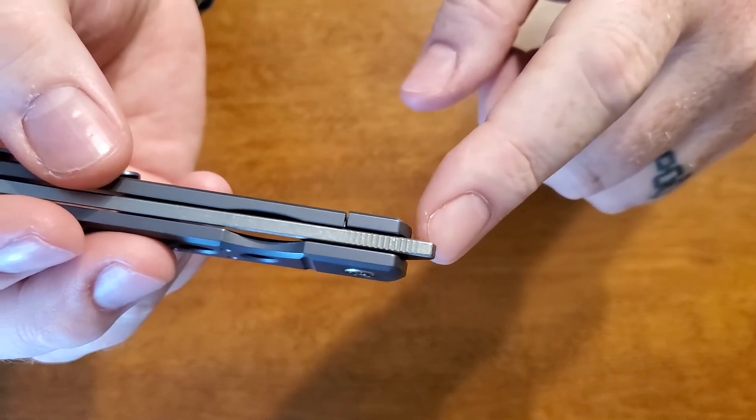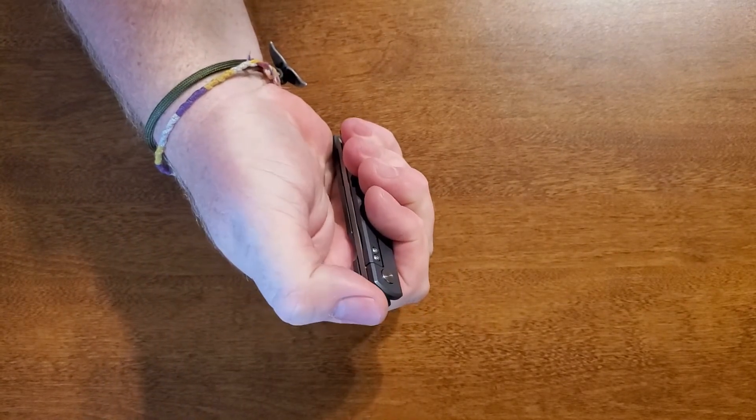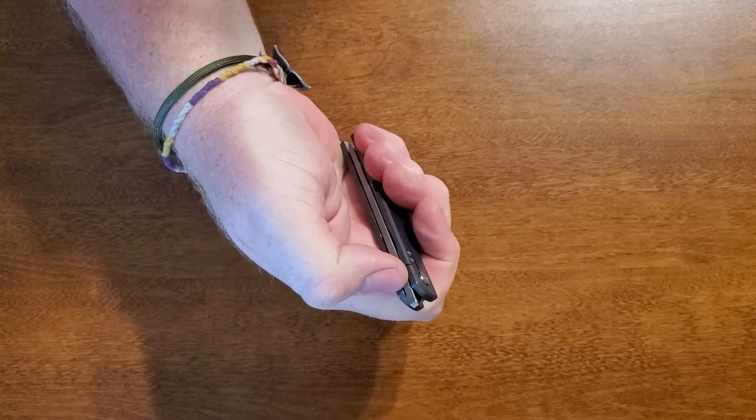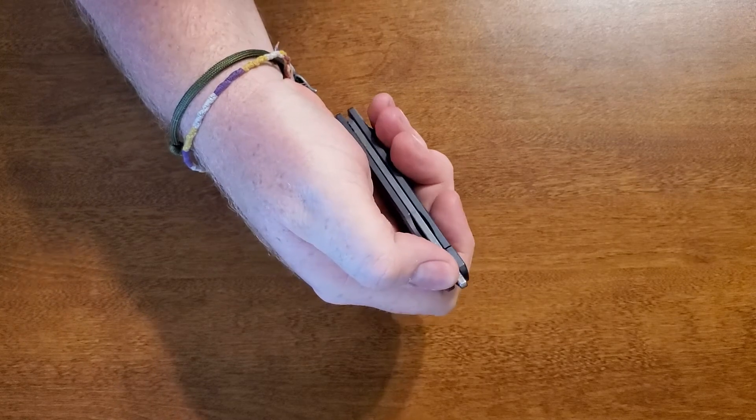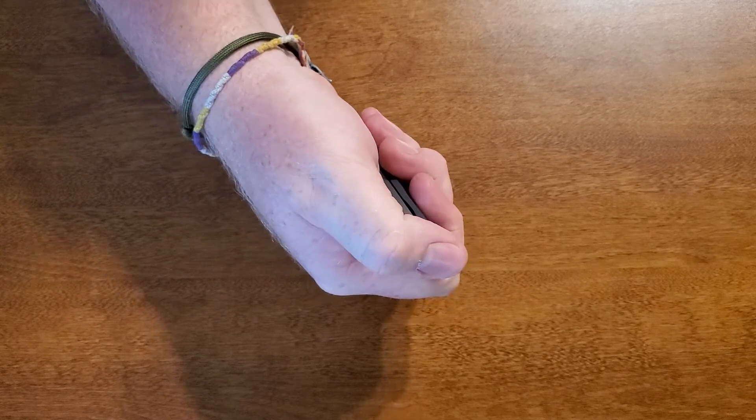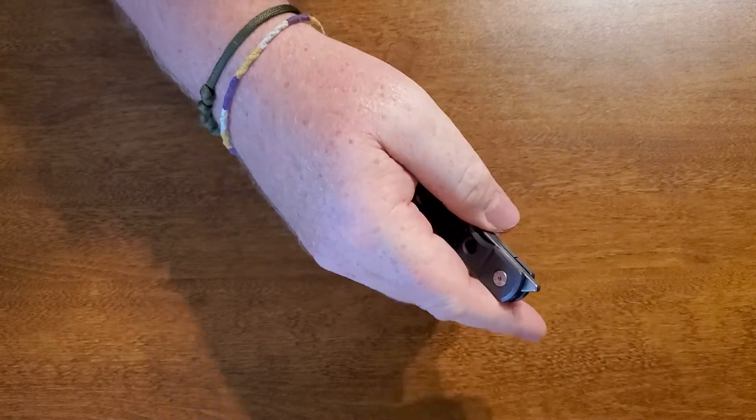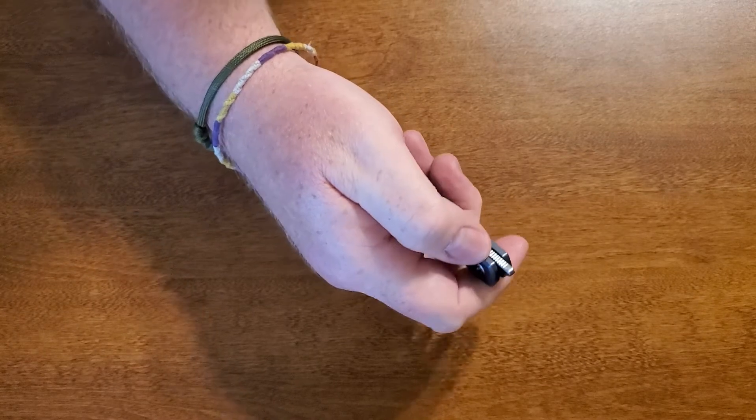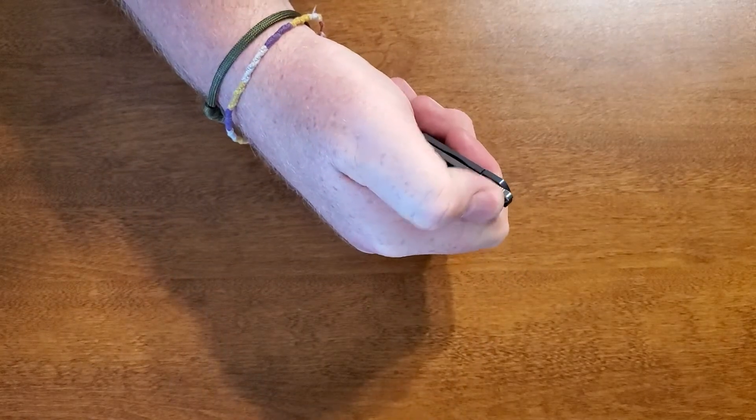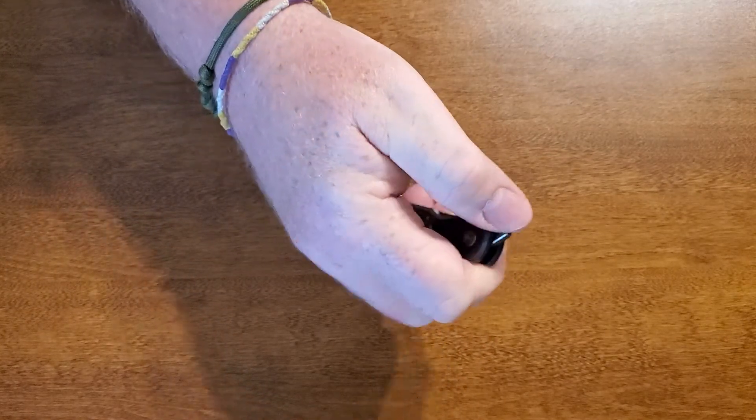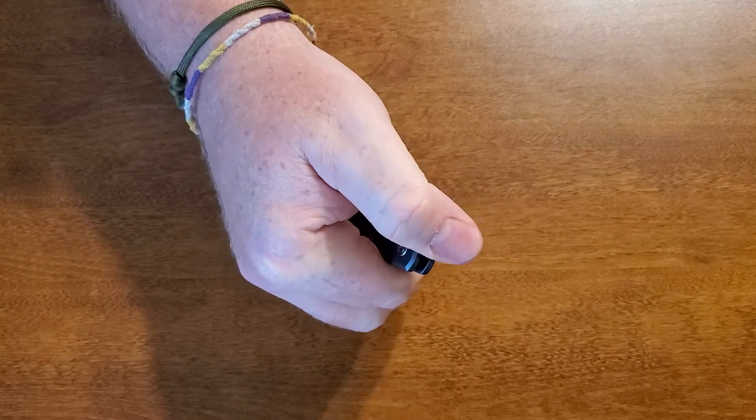So on a front flipper, that jimping should go all the way to the tip, if not a little past. Don't stop short, because when you're using that front flipper, a lot of times your thumb's just getting that edge. You're not bringing it from all the way down here. But because it's almost non-existent, I do have a fear that even if they went all the way to the tip, it would do no good. But in my opinion, if you're going to do jimping on the spine for a front flipper, do it deep enough to where it actually catches your thumb, and go all the way to the tip, if not past. So it just makes it a little bit easier. Anything to help you on that front flip is a good thing.